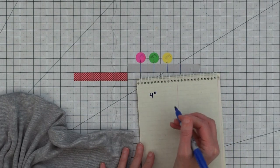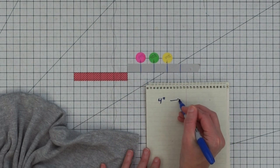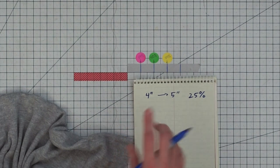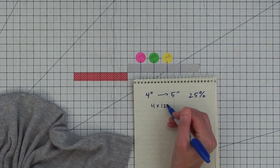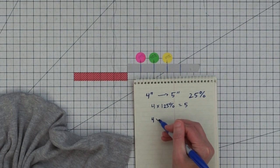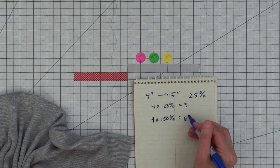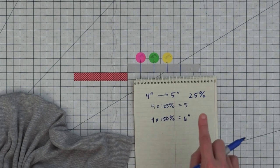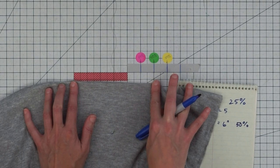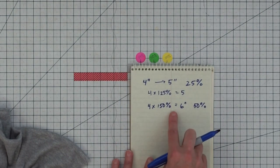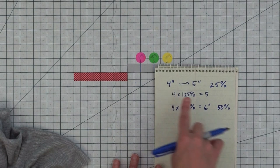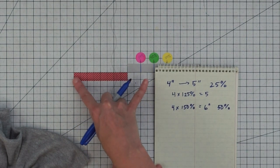Starting with four inches: if the fabric stretches to five inches, that means 25% stretch. The way I think of it — take four and multiply it by 125% and that equals five. If you're looking for 50% stretch, take four times 150% and that equals six inches. So if your fabric stretches from four to six inches you have 50% stretch, because you're getting 50% more than what you started with. You multiply by 150% because you want everything you started with plus 50%.